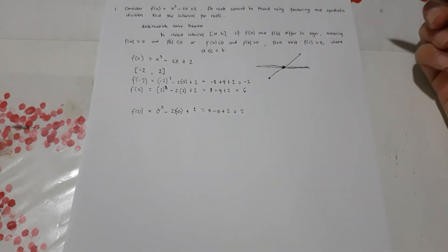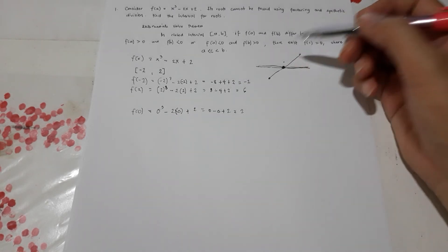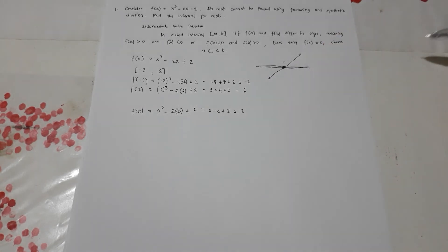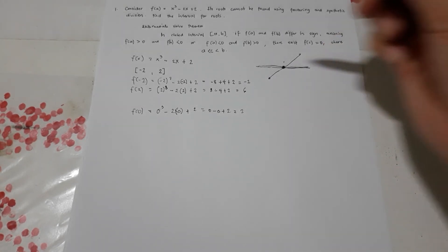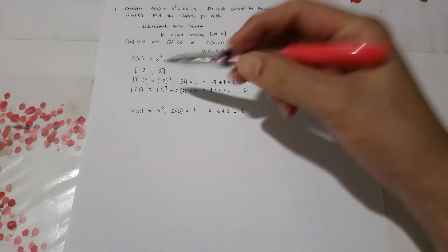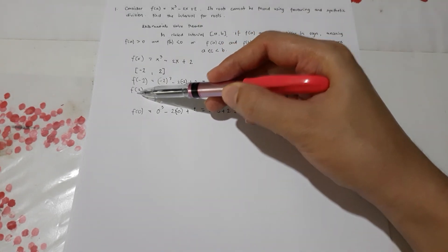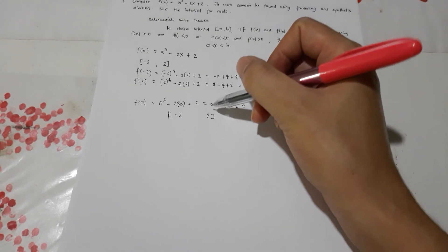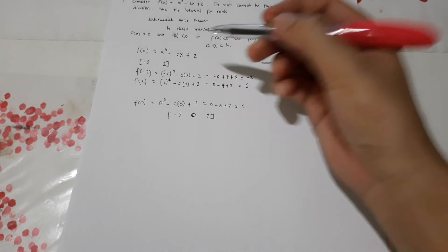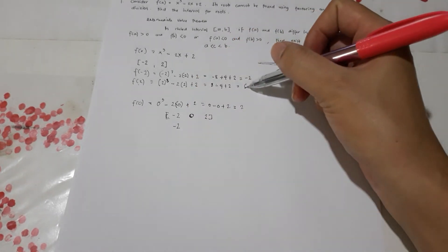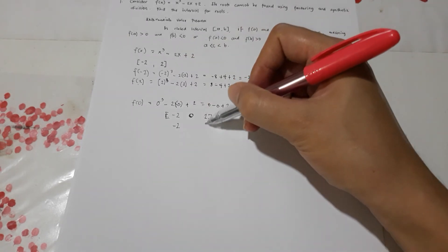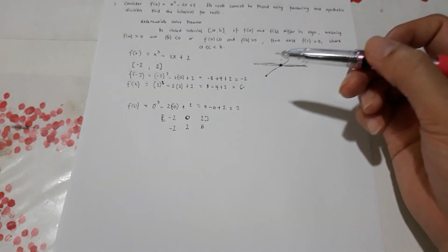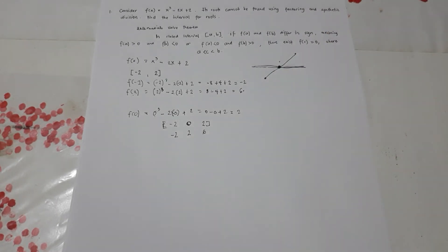Since f(0) = 2, it is positive, meaning at zero the function is above the x-axis. So we have: f(-2) = -2 (negative), f(2) = 6 (positive), and f(0) = 2 (positive). We need an interval that goes from negative to positive or positive to negative, so we choose the interval from -2 to 0.